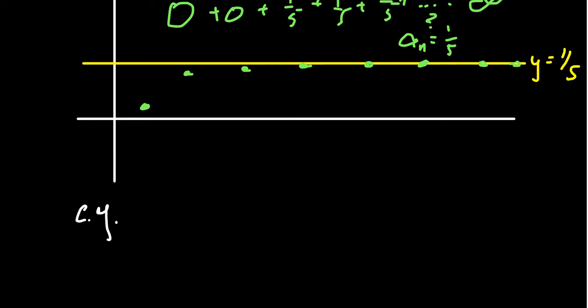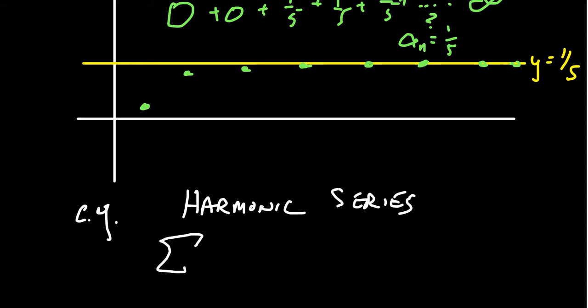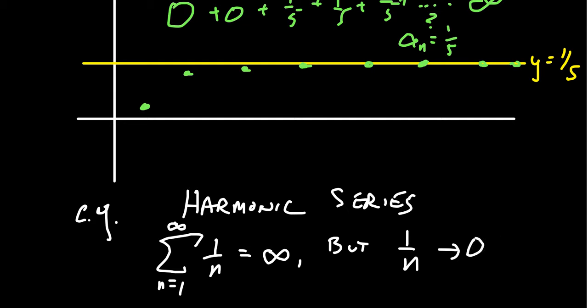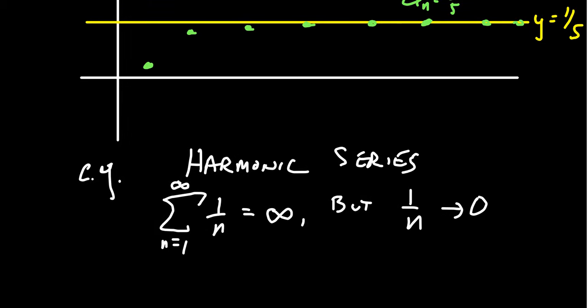As an example, consider the so-called harmonic series — the series where you take the sum from n equals 1 to infinity of 1 over n. This harmonic series diverges towards infinity, yet if you look at the sequence 1 over n, it actually converges towards 0. So if the sequence converges to 0, that does not mean the series is convergent. But if the sequence does not converge to 0, we can infer that the series will be divergent.